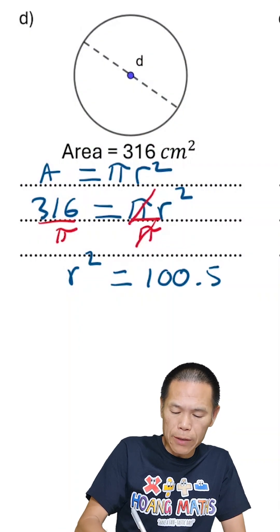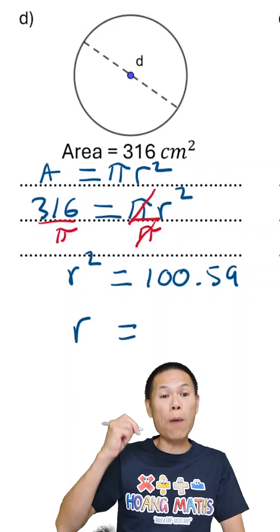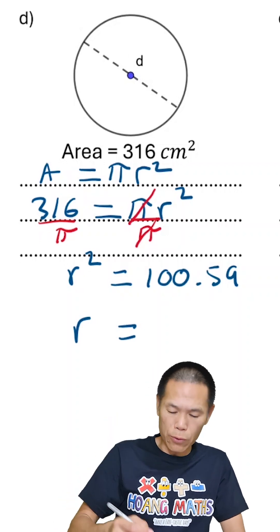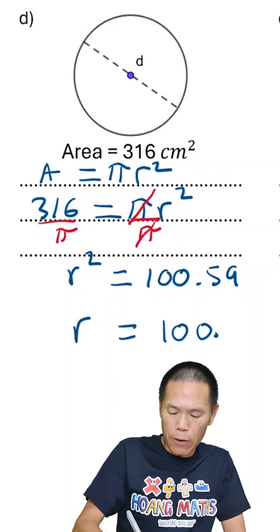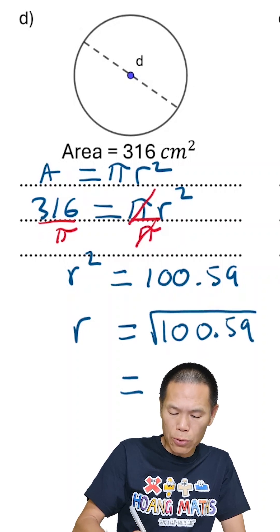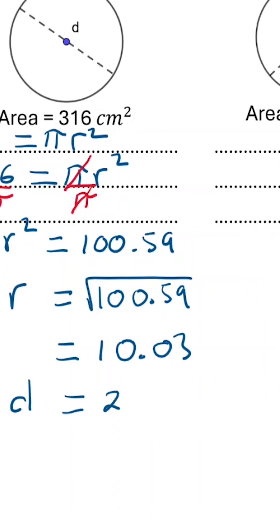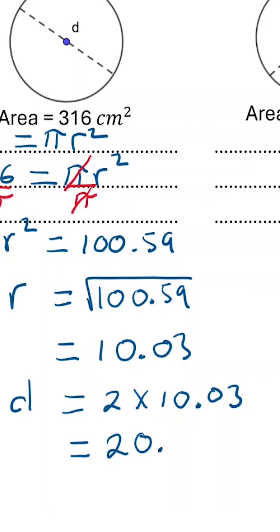Since r² = 100.59, the radius is the square root of that — the square root of 100.59 is approximately 10.03. Therefore, the diameter is two times the radius: 2 × 10.03 = 20.06 centimeters.